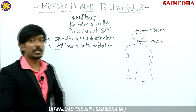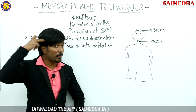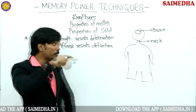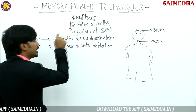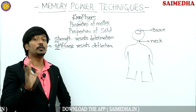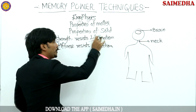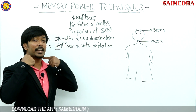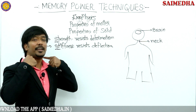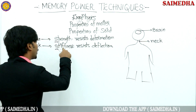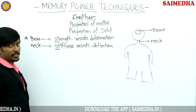Let's revise: the first part is the brain — strong — property is strength, ability to resist deformation. Second part is the neck — deflection — the deflection-resisting property is called stiffness.